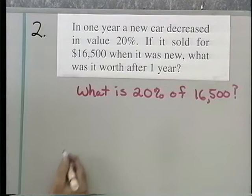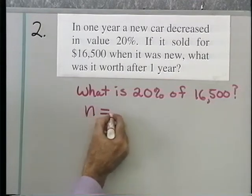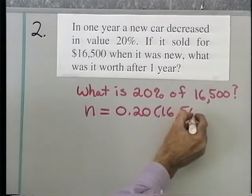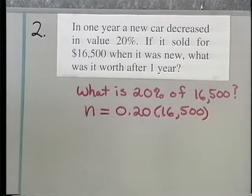So the first thing I want to do is find that. Translating, N equals 0.20 times 16,500. Now if I do that arithmetic, I'll end up with,